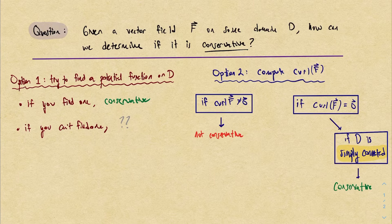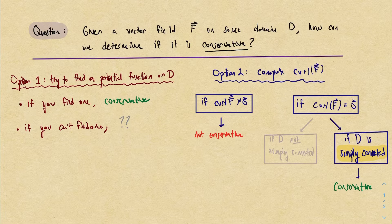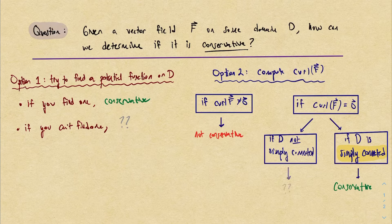It would be great if the curl being zero implied the vector field is conservative, but it's not that simple. It turns out that if the domain is something called simply connected, then we can conclude that the vector field is conservative. If D isn't simply connected and the curl is zero, we just don't know — the vector field could be conservative or it could not.